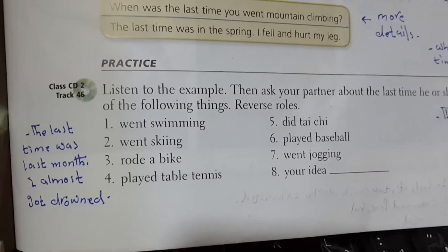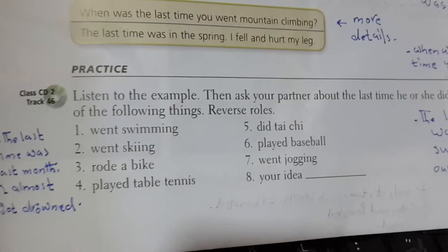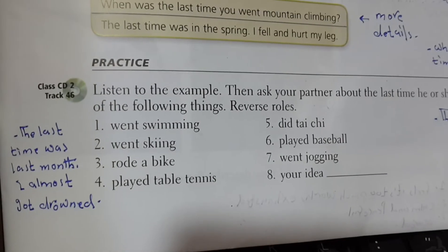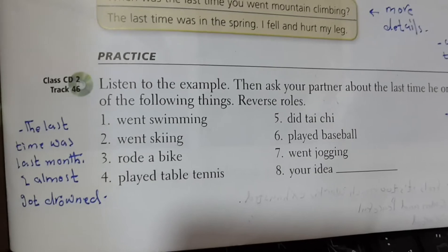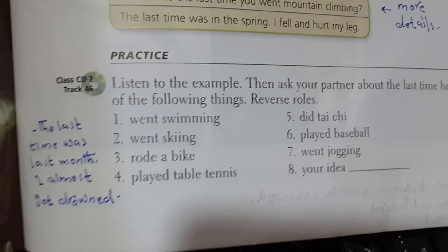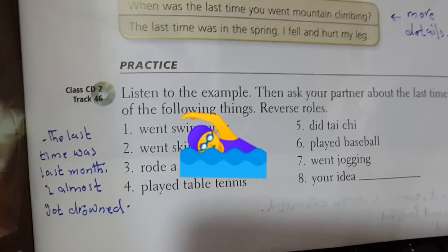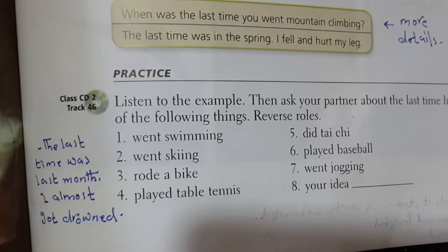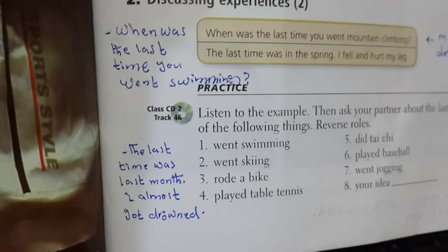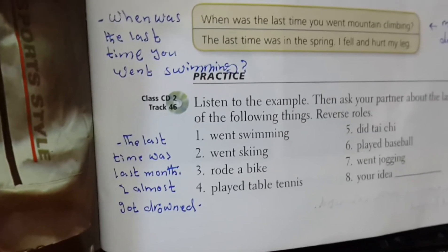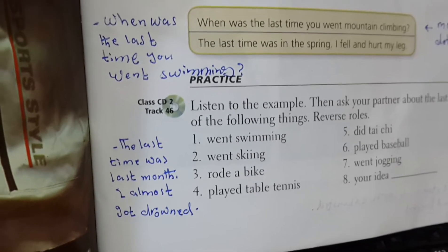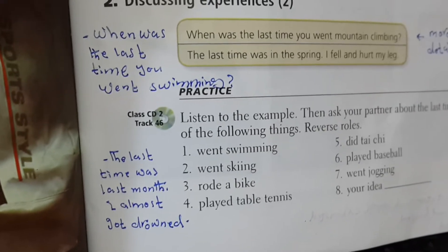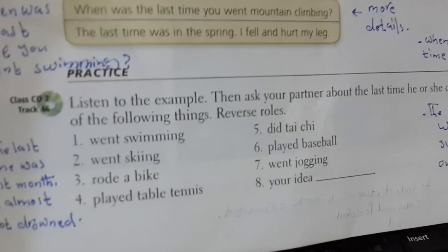We also have a practice for asking about more details. I'll do the swimming one: 'When was the last time you went swimming?' The answer might be: 'The last time was last month. I almost got drowned.' The detail is in 'I almost got drowned.' You can practice the other ones yourself.